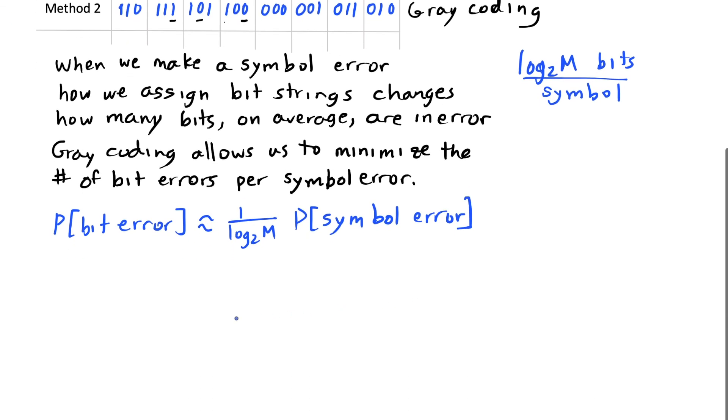And that's it. Not only is gray coding a trick to make fewer bit errors, but it makes approximating the probability of bit error easier.